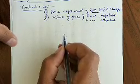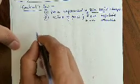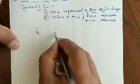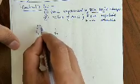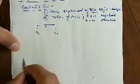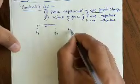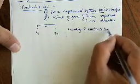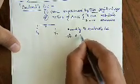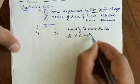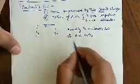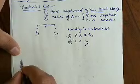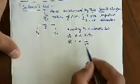Let us consider two point charges Q1 and Q2. These positive point charges are separated by a distance r. According to Coulomb's law, the force between them is, first, directly proportional to the product of the charges Q1 and Q2, and second, inversely proportional to the square of the distance between them, that is r².